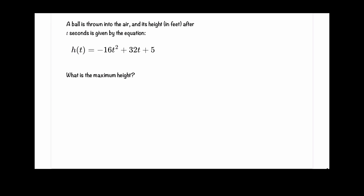A ball is thrown into the air, and its height in feet after t seconds is given by the equation h is equal to negative 16t squared plus 32t plus 5. What is the maximum height?